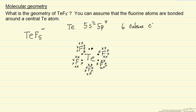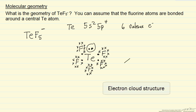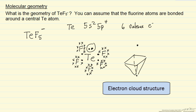We have one pair of electrons not involved in bonds. This means we have 6 electron pairs around the central atom, and this corresponds to an octahedral type structure — one above, one below. This is just a rough drawing to show what the electron clouds would look like.